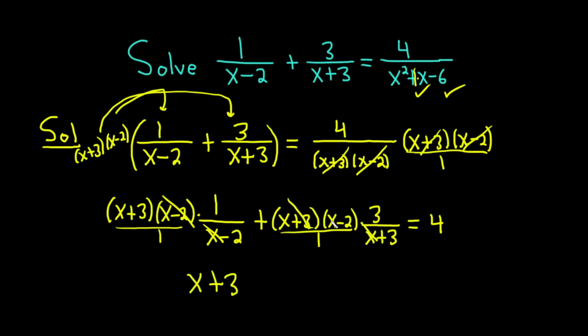Here the x plus 3 cancels. So we're left with 3 times x minus 2 over 1, which is just plus 3. Put the 3 first. Notice I did that. x minus 2, and that's equal to 4. Notice I put that 3 in front of the x minus 2, just to make it look a little better.